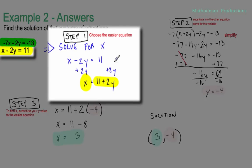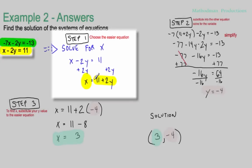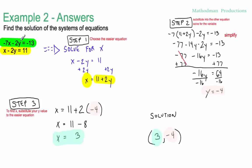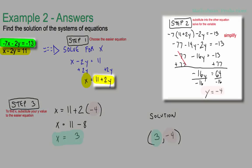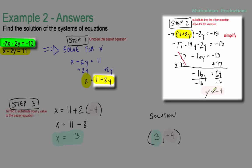All you have to do is add 2y to both sides and you get x equals 11 plus 2y. We're going to use that into the second equation — into that green one. Instead of x, I just replaced it with 11 plus 2y. Simplify from here and finally we get one of the variables solved for, which is y equals negative 4.